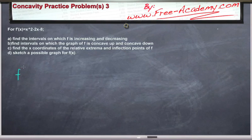We've been given that f prime of x equals x squared minus 2x minus 8. And we've been asked to find where it's increasing, decreasing, concave up, concave down, the x-coordinates of the relative extrema and the inflection points, and to sketch a graph.